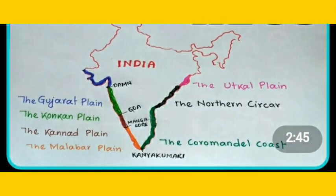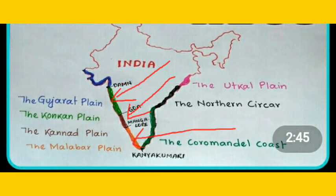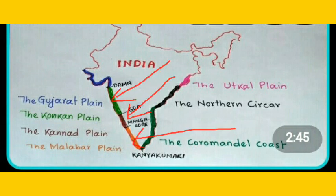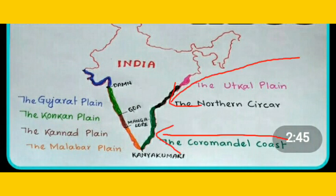The western coastal plain is sandwiched between the Western Ghats and the Arabian Sea. It is a narrow plain consisting of three sections: the northern part is called Konkan (Mumbai to Goa), the central stretch is called the Kannada Plain, and the southern part is referred to as the Malabar Coast. The plains along the Bay of Bengal are wide and level. The northern part is referred to as the Northern Sirkars, while the southern part is known as the Coromandel Coast.